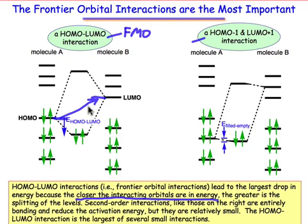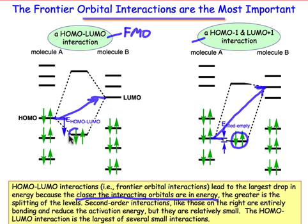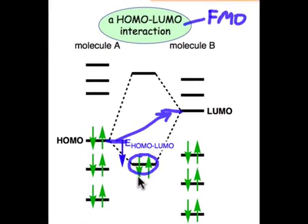That gap is quite a bit smaller than the gap we see for the HOMO minus one and the LUMO plus one. As a consequence of this larger gap, the splitting is less in this case, and the amount of stabilization gained by these electrons from this pair of interacting orbitals is small in comparison to the stabilizing energy that this pair of electrons gains from the frontier molecular orbital interaction.